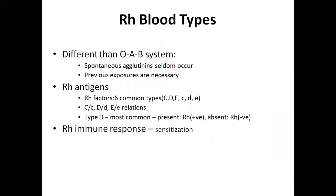The Rh blood group system is different from the ABO system. In the Rh system, spontaneous agglutination seldom occurs because it requires previous exposure for the development of antibodies, whereas in the ABO system spontaneous antibodies develop. There are six types of Rh antigens, commonly called Rh factors: C, D, E, c, d, and e. If the C antigen is present, its corresponding c antigen must be absent, and if the D antigen is present, its corresponding d antigen must be absent.